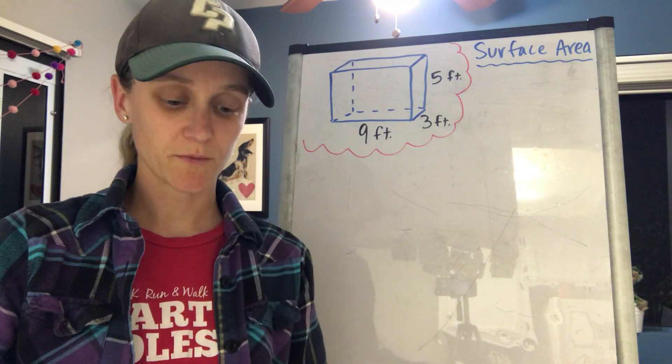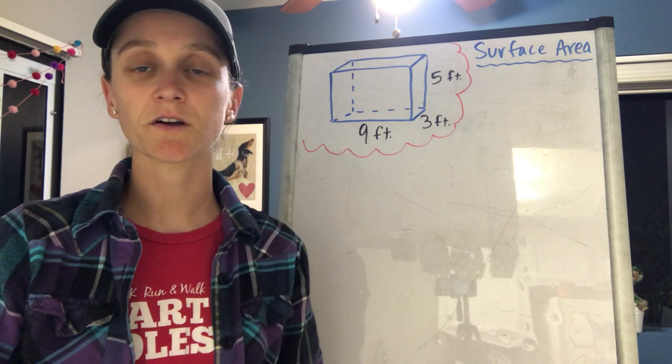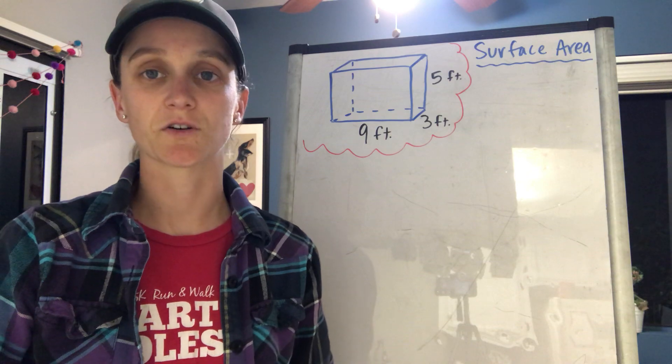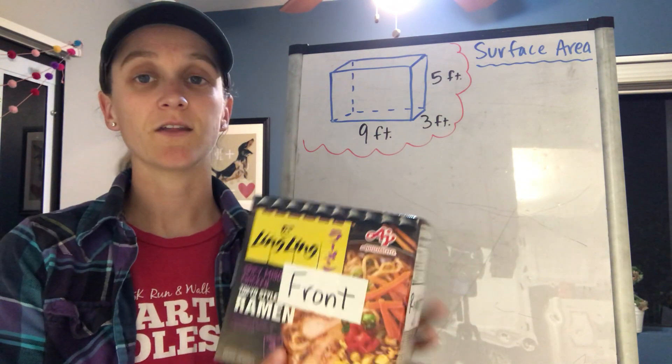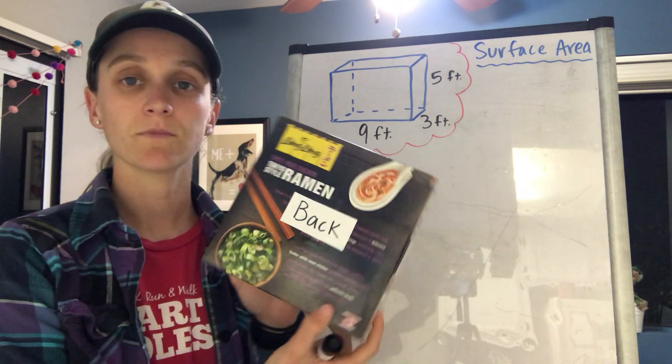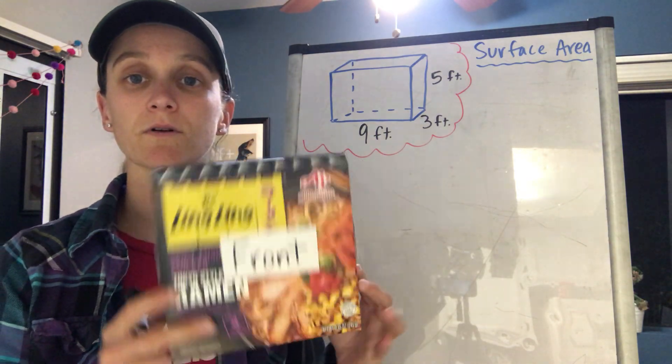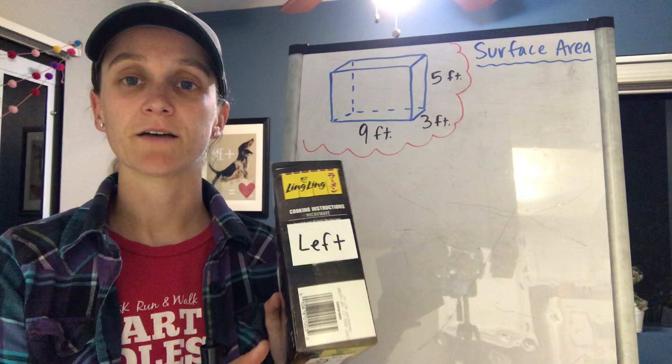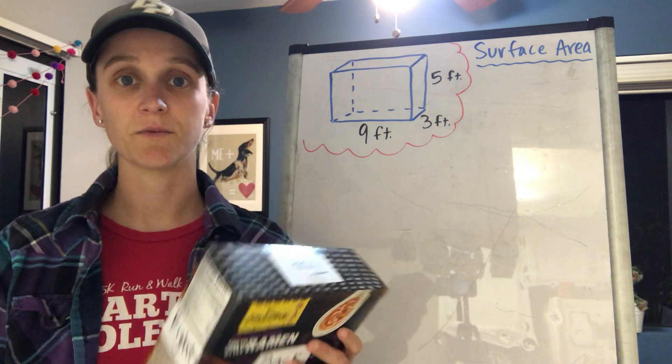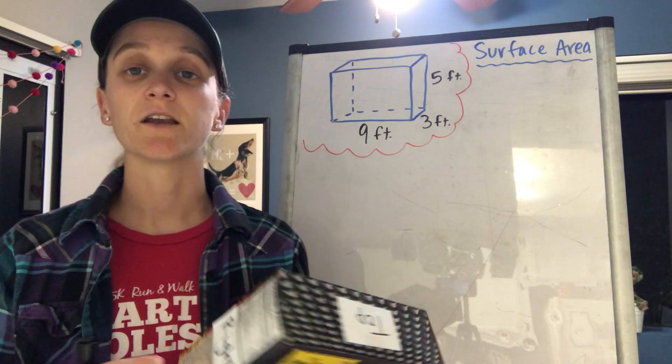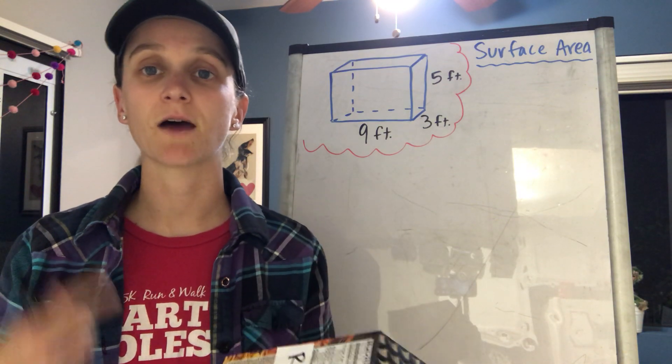Everyone, in this video I'm talking about surface area. Remember, surface area is just the area of every surface. So if I have a 3D shape, then I need to find the area of the front, the back, the top, the bottom, the left, and the right. However many faces there are, I need to find the area of all of them and then add them all up to get the surface area.